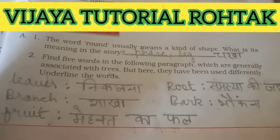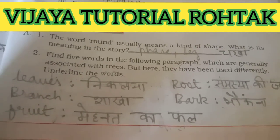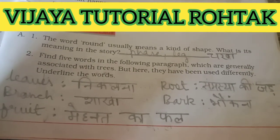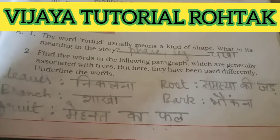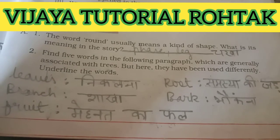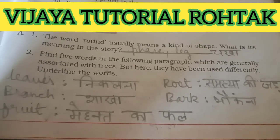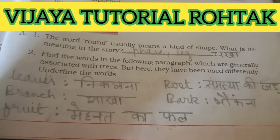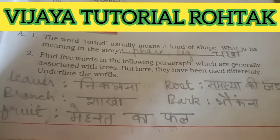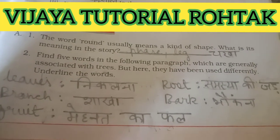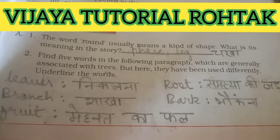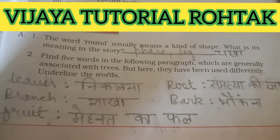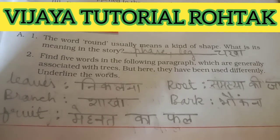The second question tells us there are words related to plant parts which also have other meanings. We will write those words from the passage. First: 'leaves' — leaves means 'patte,' but here 'leaves' means to go out or depart. For example: 'My father leaves for office at 7 a.m.' So 'leaves' here means 'nikal'na' — to depart.